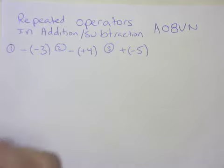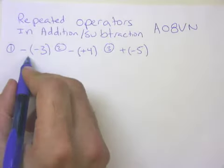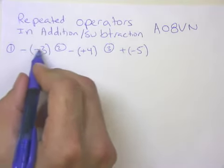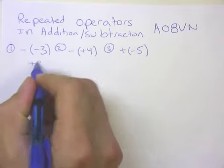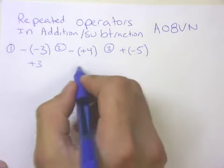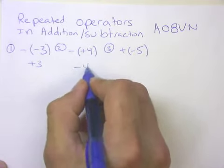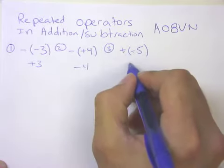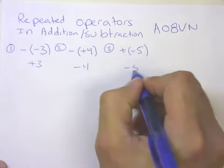All right, welcome back. Hopefully now you've written all these things down in a simplified form. The negative of negative three is what? Positive three. The negative of positive four is negative four. And the positive of negative five is negative five.